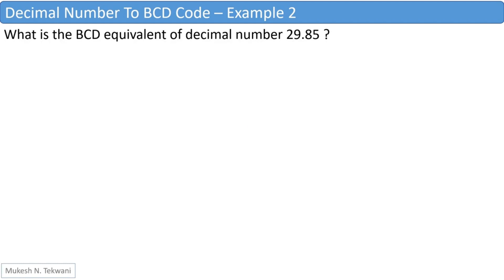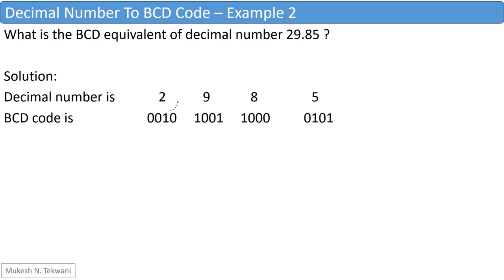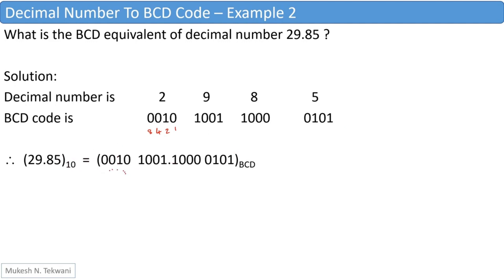Now let us consider the second example where we have to find the BCD equivalent of the decimal number 29.85. We will write the digits of this number separately: 2, 9, 8, 5 — ignoring the decimal point for now and taking care of it towards the end. The BCD value of 2 is 0010, since the bit with weight 2 is set and all others are 0. The BCD code for 9 is 1001, for 8 is 1000, and for 5 is 0101. So this becomes the BCD code for 29.85.